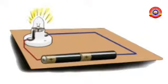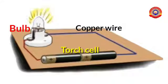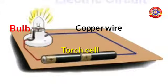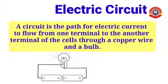Look at this picture. What are the components used here to make the bulb glow? Yes, torch cell, bulb, and copper wire. This arrangement is an electric circuit. A circuit is the path for electric current to flow from one terminal to the another terminal of the cells through a copper wire and a bulb.